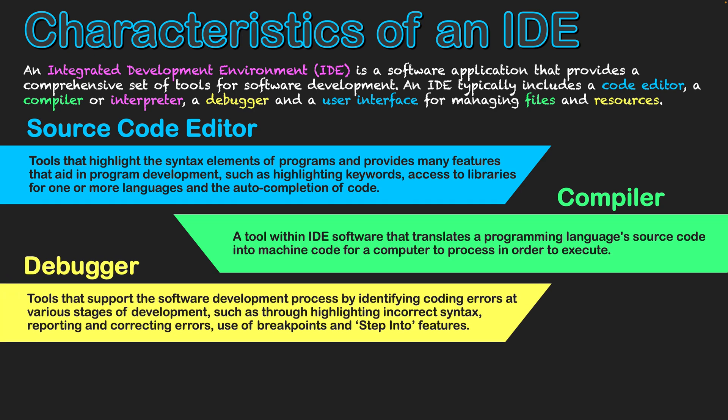The next area is that of a debugger — tools that support the software development process by identifying coding errors at various stages of development. A debugger helps find bugs, which is the term used for errors. This might be through highlighting incorrect syntax while you're writing code, such as underlining it in red. It can also report and correct errors, stopping the program in debugging mode and highlighting problem areas in yellow with suggestions for fixes. It can also allow the programmer to use tools such as breakpoints to test portions of their program, or step-through features to go through subroutines part by part and verify their code is correct.